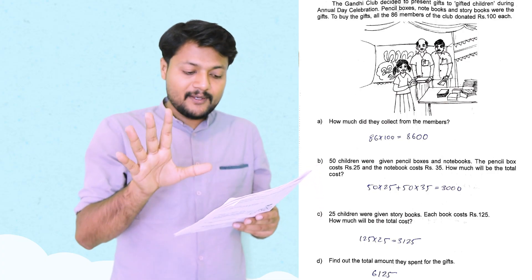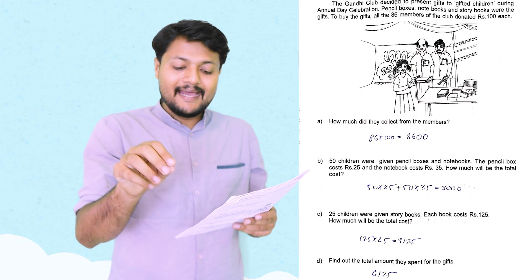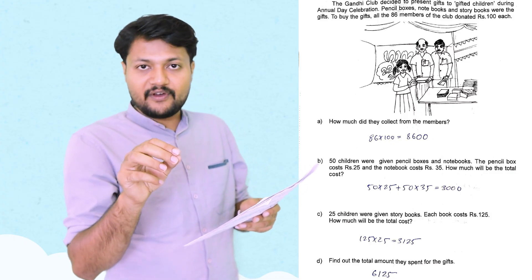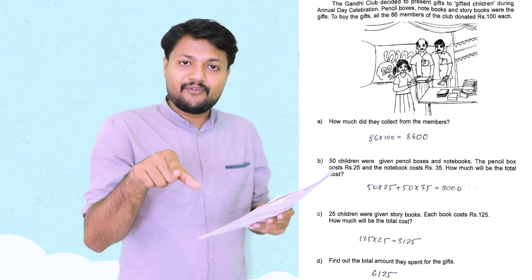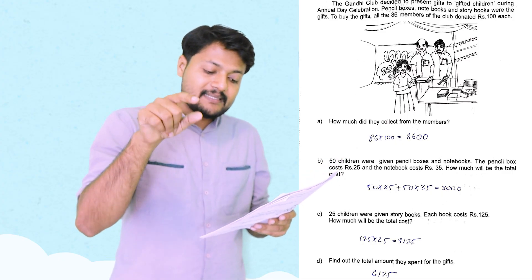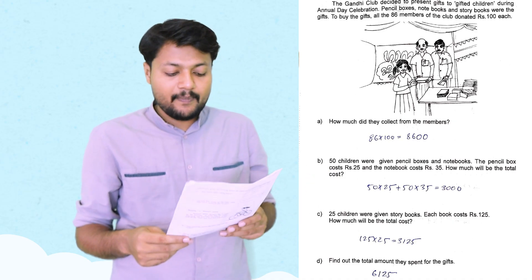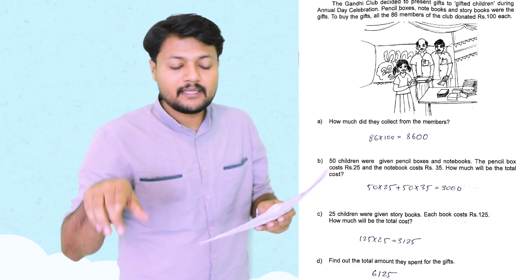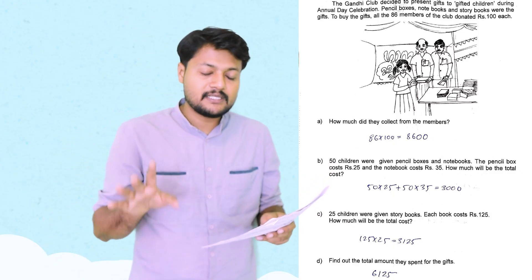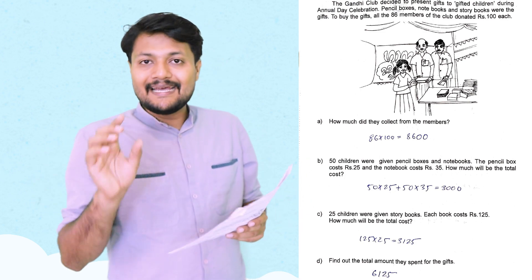50 children were given pencil boxes and notebooks. The pencil box cost is Rs. 25 and the notebook cost is Rs. 35. How much will be the total cost? If we have the total cost: 50 into 25, 50 into 35. The total cost is 3,000.